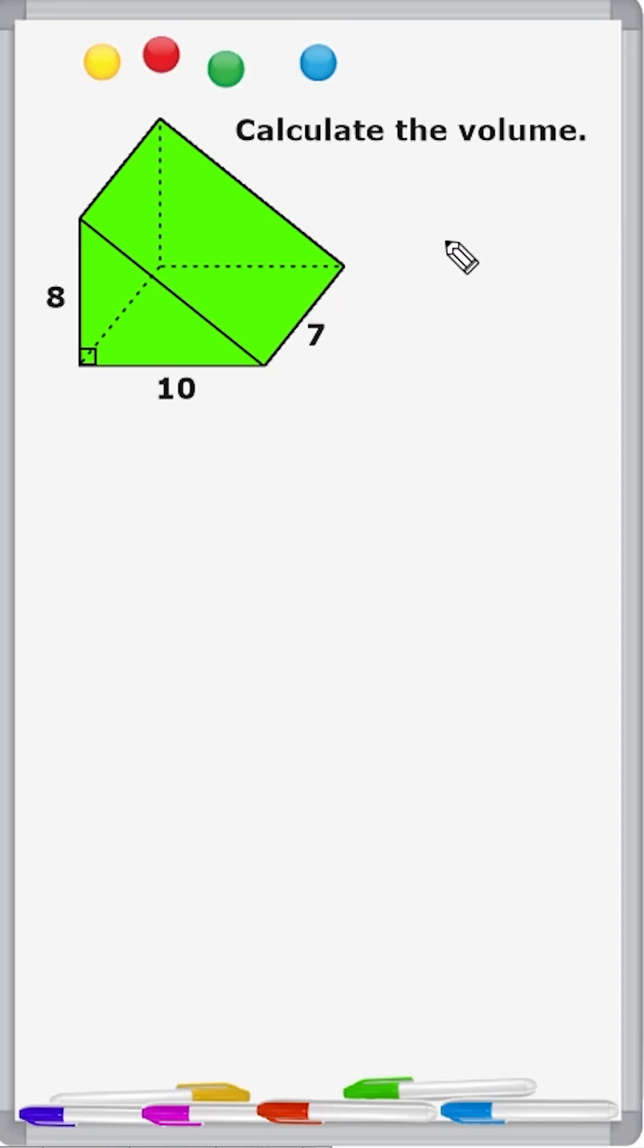All right, to calculate the volume of any triangular prism, basically what we do is we just take the area of that triangular base and multiply it by the height of the prism.